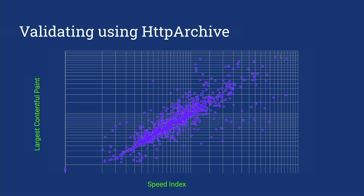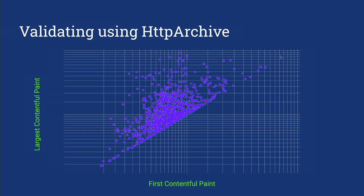This chart shows largest contentful paint versus speed index, which we know is a great main-content-painted metric. There's a 0.83 correlation, which we're really happy with. But what about orthogonality — do all performance metrics just correlate? No, they don't, which is good. This next chart shows largest contentful paint and first contentful paint. There's a diagonal line because LCP can't be before FCP. But on the other side of the line there's a big spectrum — sometimes LCP is really close to FCP and sometimes really far away — and there's not as much correlation. So it's definitely a different metric.